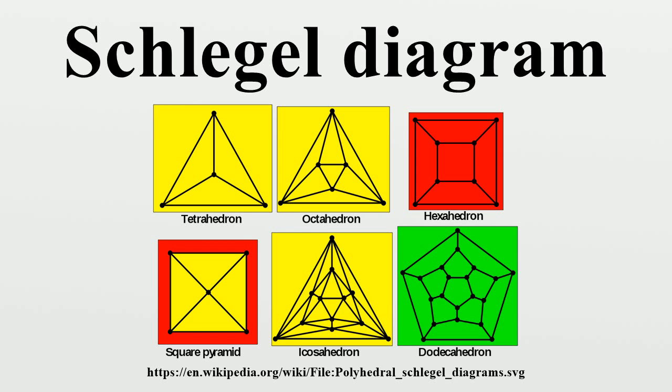He introduced this tool in 1886 for studying combinatorial and topological properties of polytopes. In dimensions 3 and 4, a Schlegel diagram is a projection of a polyhedron into a plane figure and a projection of a four-polytope to three-space, respectively.